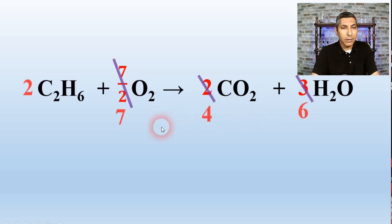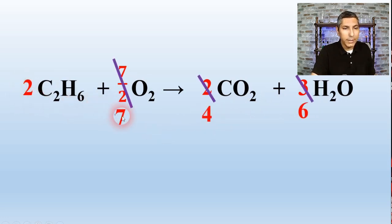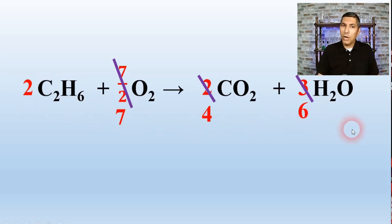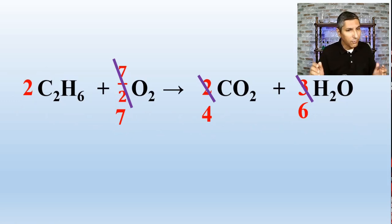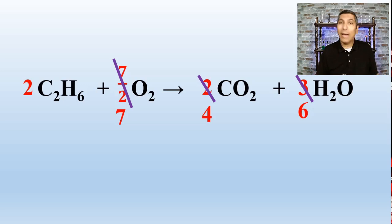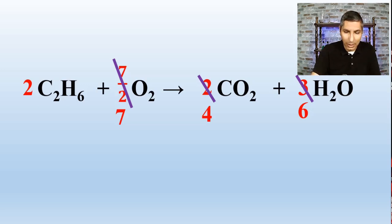My new lowest whole number coefficients are 2, 7, 4, and 6. Double-checking: 4 carbon atoms on both sides, 12 hydrogen atoms on both sides, and 14 oxygen atoms on both sides. This is a balanced equation.